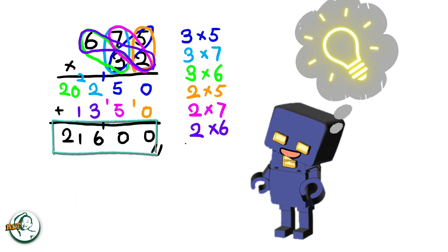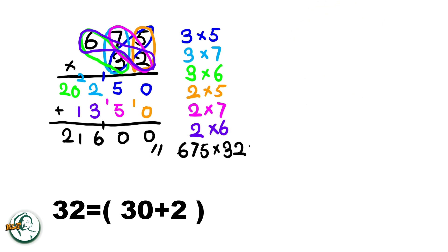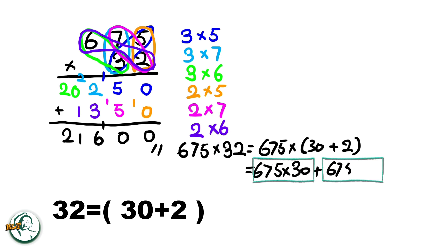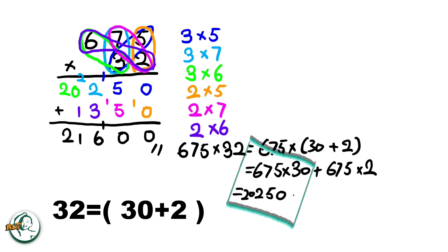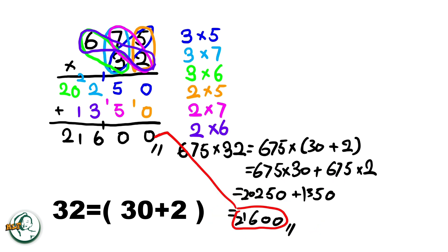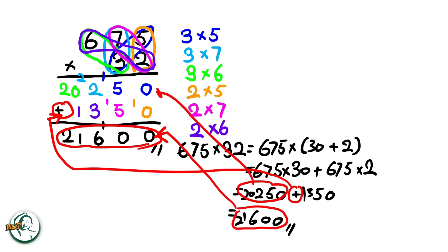Let's dive into the rationale behind this method. Consider 32 as 30 plus 2. We can express 675 times 32 as 675 times (30 plus 2). This expands into 675 times 30 plus 675 times 2. Calculating, we get 20,250 for 675 times 30, and 1,350 for 675 times 2. Adding these results together, 20,250 plus 1,350 equals 21,600. This explains why we need to add these two numbers here in the column method.